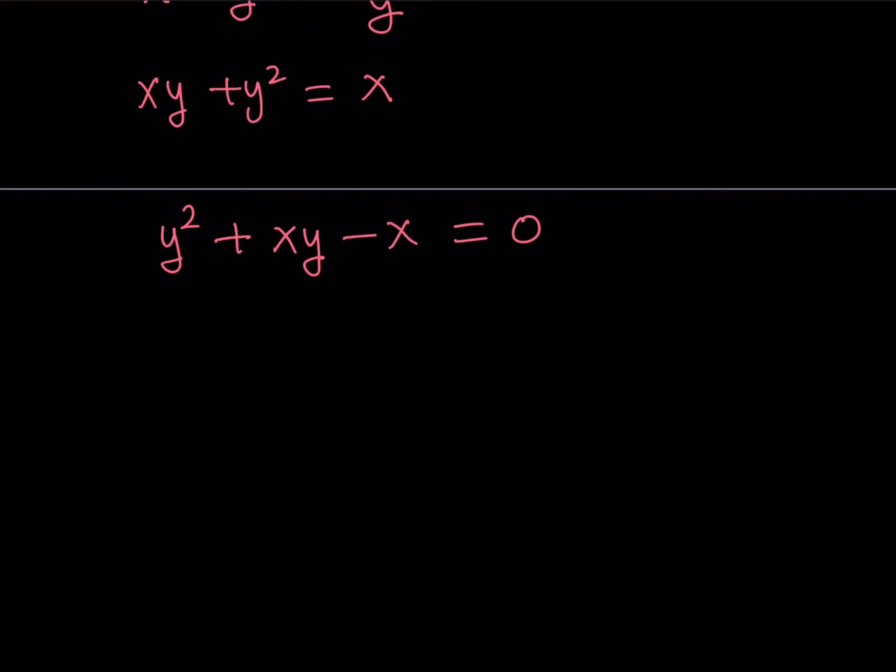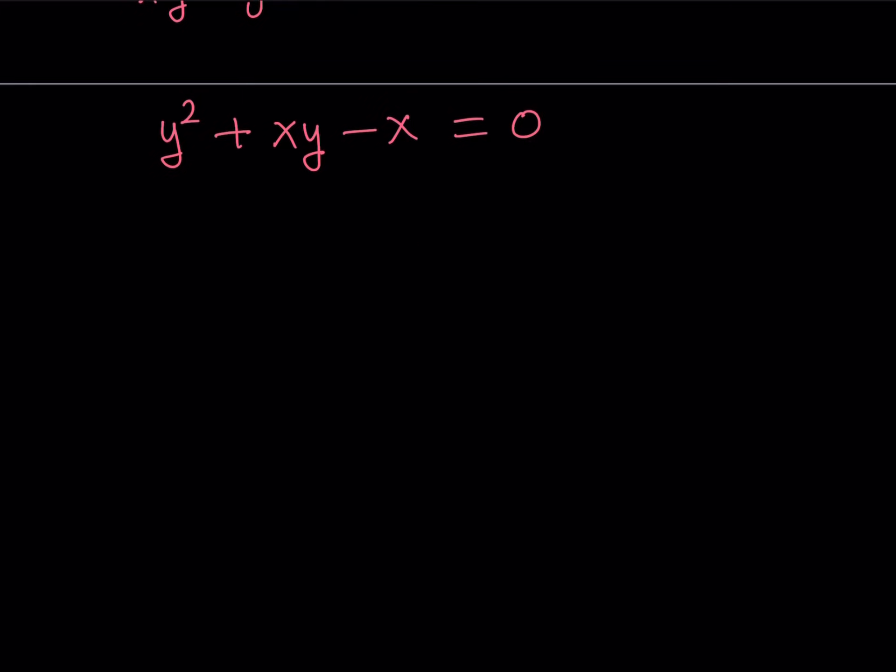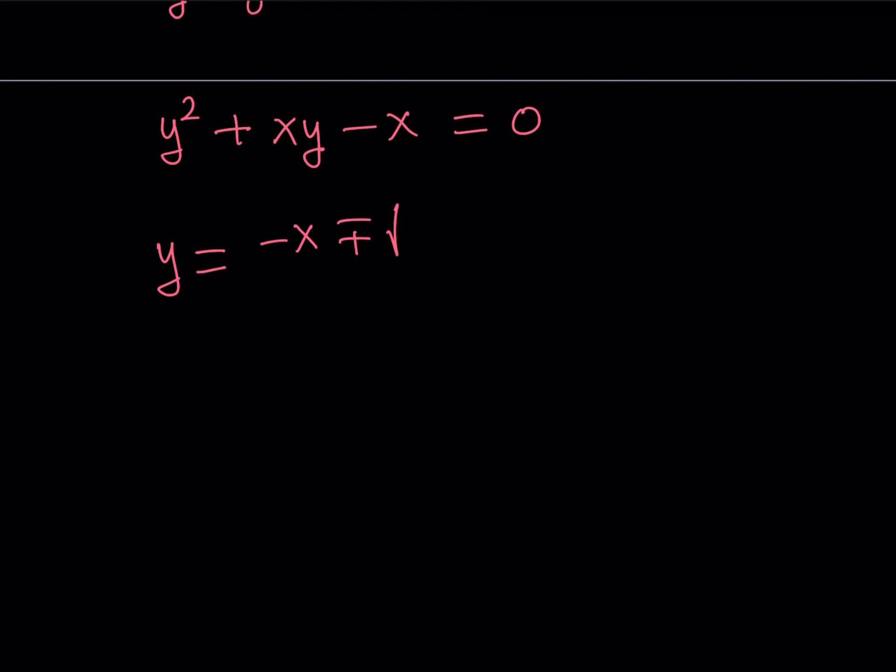So let's go ahead and solve this equation. Obviously, best method here, I think, is the quadratic formula. Since it's not factorable, at least not easy. So I can write y as negative b, which is x in this case, b is x, plus minus the square root of the discriminant. As you know, the discriminant is b squared minus 4ac. So it's going to be x squared minus 4 times 1 times negative x. That's going to be a positive 4x. And all over 2 times a, which is 2 in this case.